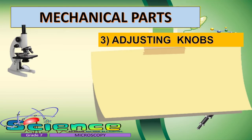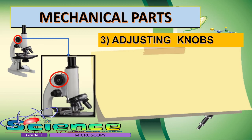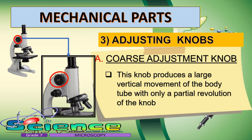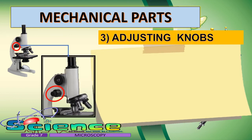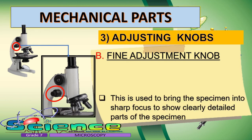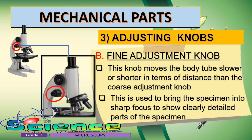There are two types of adjusting knobs. The bigger adjusting knob is the coarse adjustment knob, which produces a large vertical movement of the body tube with only a partial revolution of the knob. The smaller adjusting knob is the fine adjustment knob, used to bring the specimen into sharp focus to show clearly detailed parts. This knob moves the body tube slower and shorter in distance than the coarse adjustment knob.